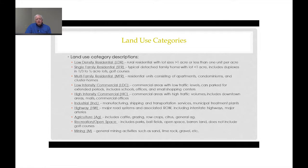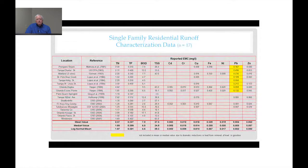This is an example of the available database with respect to single-family residential runoff. Currently there are 17 studies in the single-family residential database. All of them have listed values for total nitrogen and total phosphorus. Most of them have BOD and suspended solids. But when you get into the metals, data availability becomes less. At the bottom of the table, we have provided mean values, median values, and log-normal mean values.